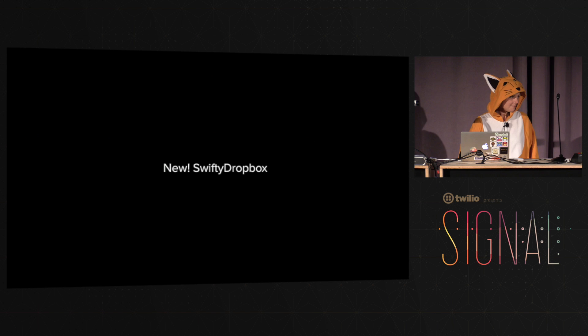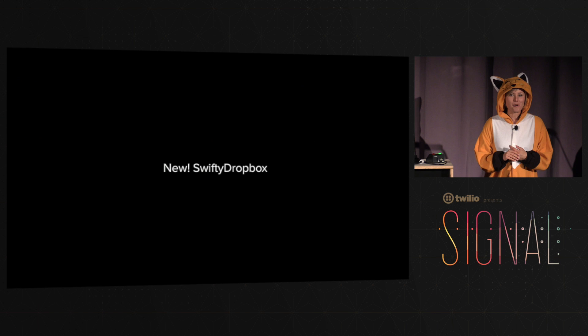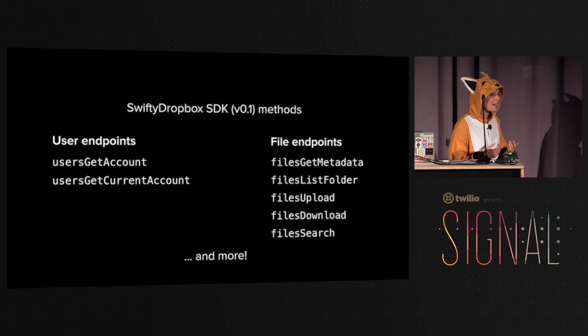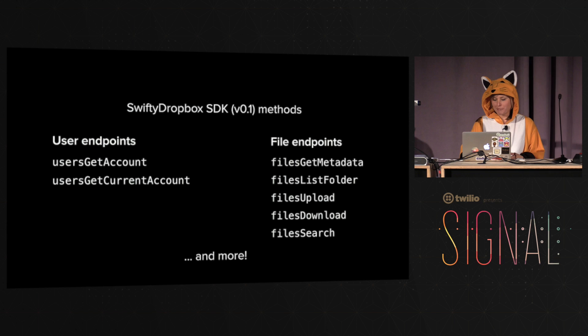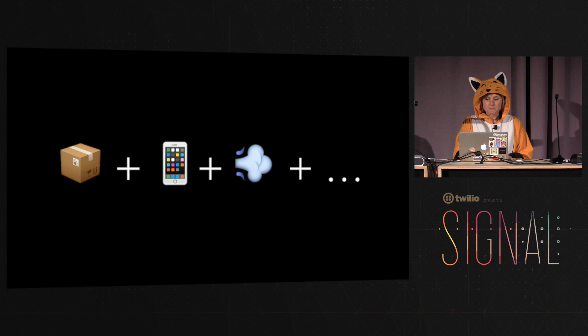Another big announcement today: we announced API v2 a couple months ago, but the big thing today is we made a new SDK. Our first SDK for API v2 is in Swift, and it's called Swifty Dropbox. It handles most of the handful of API v2 endpoints — file operations, upload, download, search, and a couple more. We'll keep adding new endpoints to both the HTTP API and to the Swift SDK as needed.